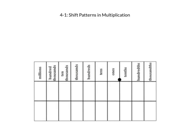In the first part of this lesson, you are going to understand how when we are multiplying by multiples of 10, there is a shift pattern in the digits. So let's start off with $1. If you have $1, then you have one $1 bill. Looking at our place value chart, I put a 1 in the ones place of the chart.